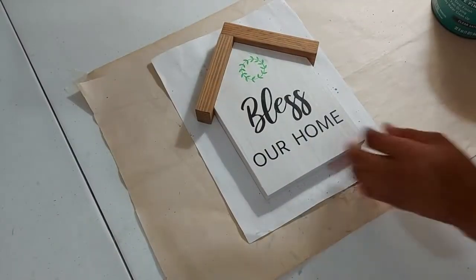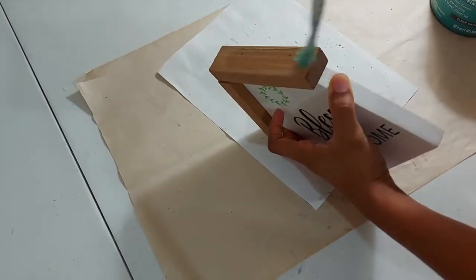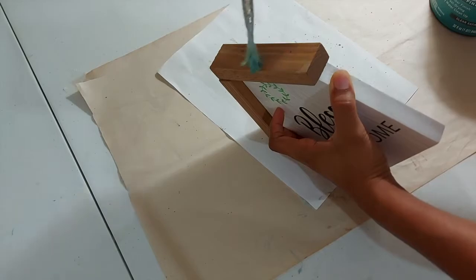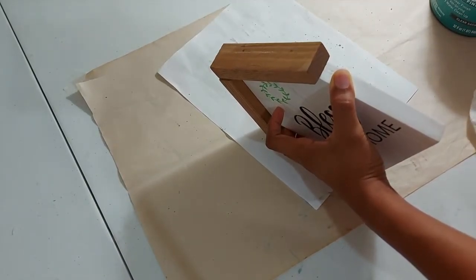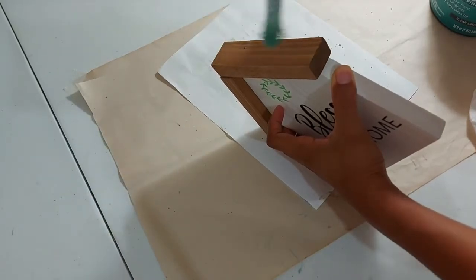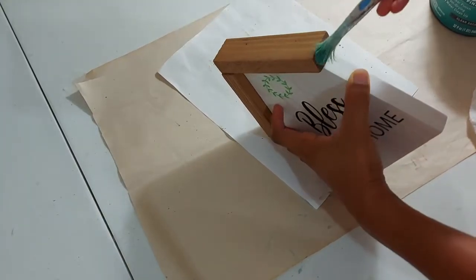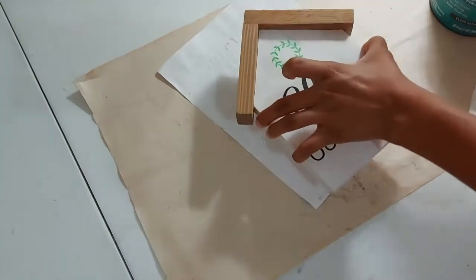So now that everything is dry and put together, I'm going to put a coat of polycrylic on the wood. And this just seals off the wood from getting any moisture or water damage. So you can wipe down the pieces from time to time if you're cleaning out.